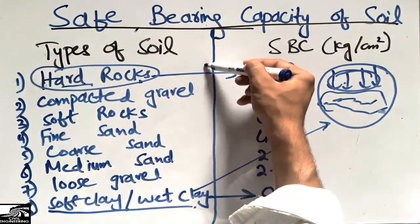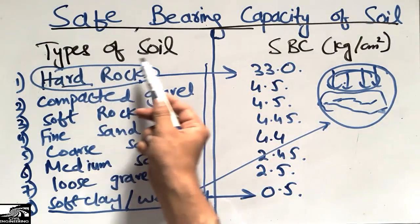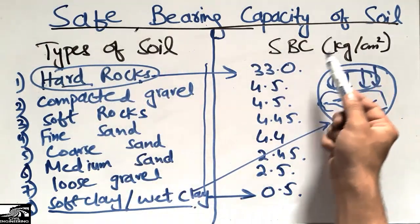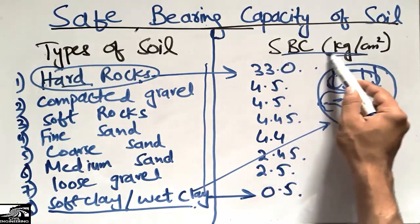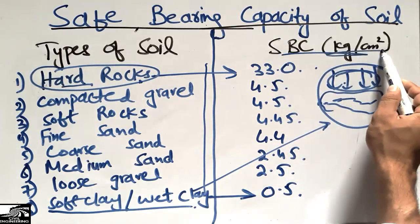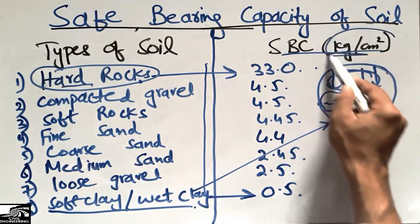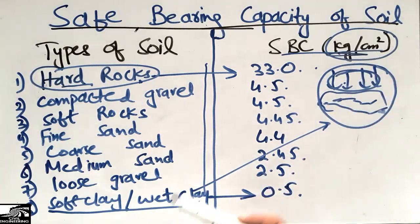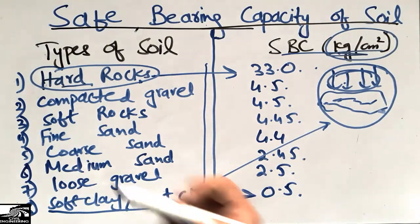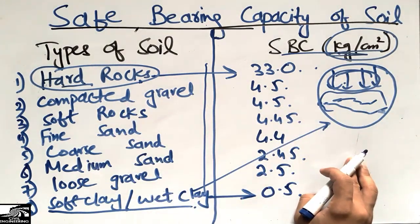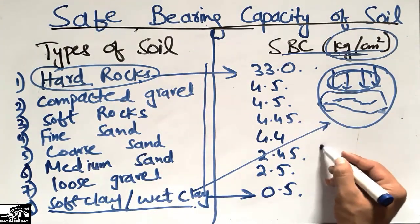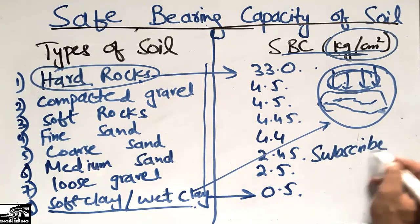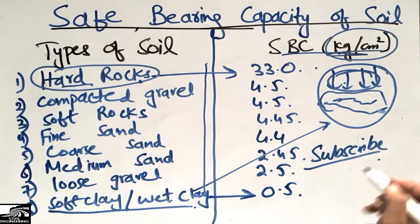These were the values of the types of soil with respect to safe bearing capacity in kilogram per centimeter square. The units can change, so it should be remembered. This was all about the safe bearing capacity of the soil — don't forget to subscribe to our channel for other civil engineering updates. Thank you.